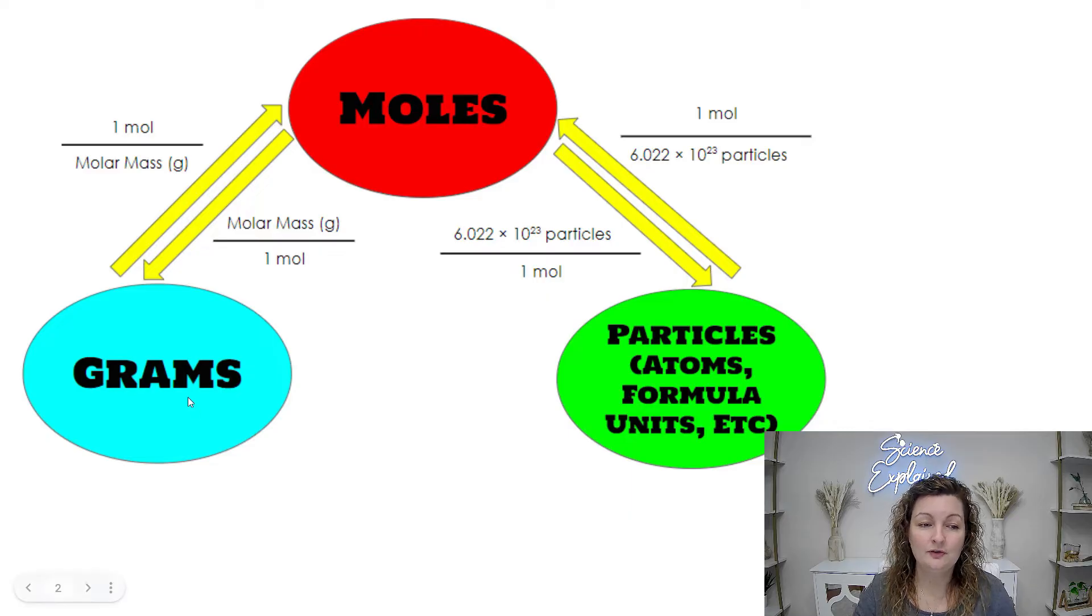So if we want to go from grams to particles, there is no straight shot road to get there. We're going to have to go through moles in order to get there. And same thing going in reverse. If we want to start with particles and end up with grams, we can't just go straight there. There's no road. We have to go through moles or convert to moles and then go to grams. So these are your ratios that you're going to be using in order to get to where you want to be.